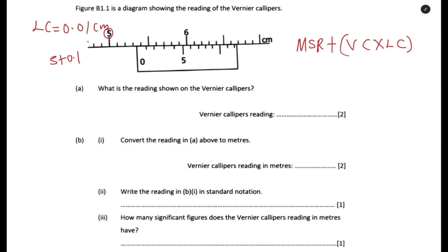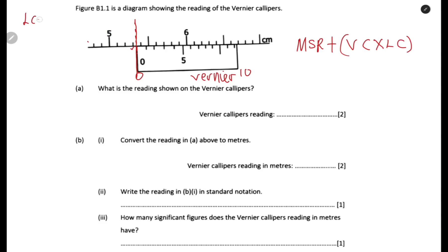To get the main scale reading, you pick it immediately before the Vernier scale closes this line. The Vernier scale is the lower part, and it normally goes from 0 to 10. You pick the last division on the main scale before the zero of the Vernier scale. In this case, from 5 we count 1, 2, 3 divisions — that is 0.3 — so 5.0 plus 0.3 gives us 5.3 centimeters as the main scale reading.